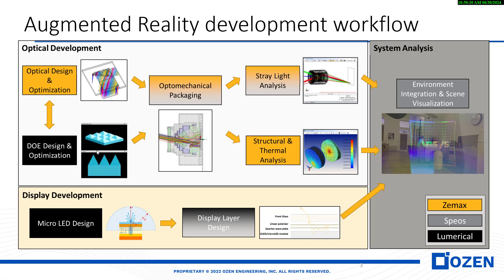Those diffractive elements mean we are working at different scales — here at the nano scale, and here at the ray optics scale. Then we have some optomechanical packaging that we need to consider in the simulation. We also need to do stray light analysis and simulate the stray light. Because of structural and thermal issues, we need to consider structural and thermal effects as well.